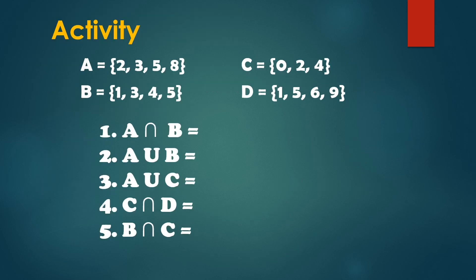Let us have an activity. Set A equals {2, 3, 5, 8}, set B equals {1, 3, 4, 5}, set C equals {0, 2, 4}, and set D equals {1, 5, 6, 9}. First, kunin natin yung intersection ni A at B. So kapag intersection, ang titignan natin ay yung common elements — 3 and 5. So A intersection B is equal to {3, 5}.